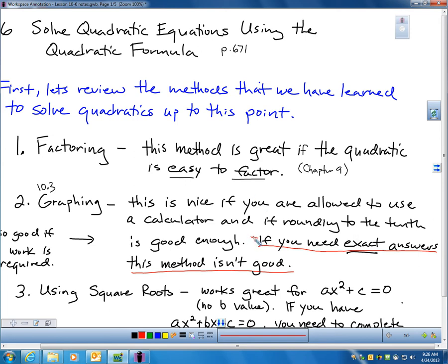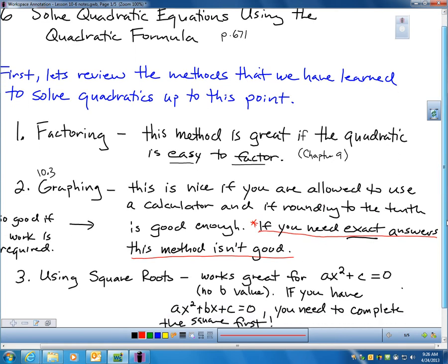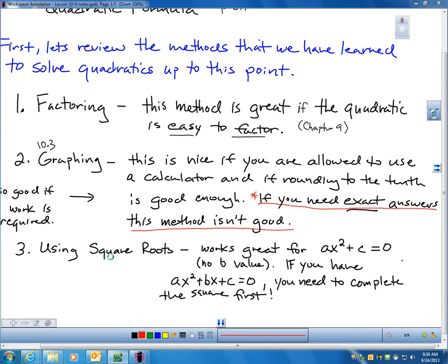So it's important to know this is only good if rounding the answers are okay. The third method, we just learned this method in section 10.5. 10.4 and 10.5, we were using square roots. Now remember, using square roots is very good if we don't have a B value. If we do have a B value, as we just learned in section 10.5, we can complete the square and then be able to use square roots again.